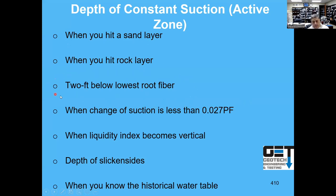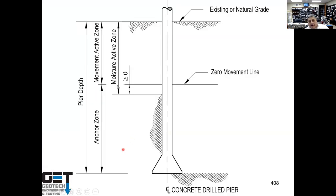That's why it's very important to show where root fibers are in your projects — we show that in all of our boring logs, and not very many people do that. The active zone depth also considers when suction change of less than 0.027 PF is exceeded, when the liquidity index becomes vertical, the depths of your slickensides. We've got a whole bunch of slickensides in some school districts such as Pasadena ISD, Alvin ISD, Corbett ISD, Lamar ISD, and Alief ISD. Also, the depth of historical high water is considered.